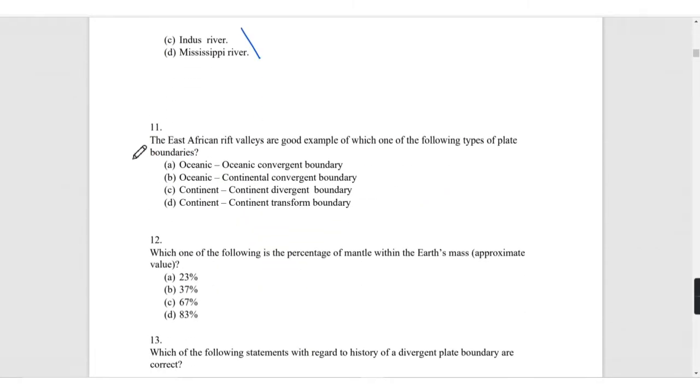The East African rift valleys are good examples. If you have watched my 2018 video of assistant geology, I have explained about East African rift valley. It is an example of continent-continent divergent boundary.